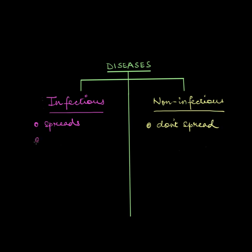Infectious diseases are caused by pathogens, like bacteria and viruses. They enter your body and multiply like crazy, and then they infect others via different excretions, like a sneeze, a cough, or even feces.